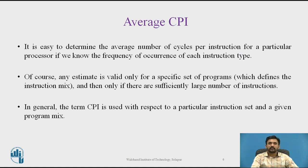It is easy to determine the average number of cycles per instruction (CPI) for a particular processor, if we know the frequency of occurrence of each instruction type. Any estimate is valid only for a specific set of programs and only if there are a sufficiently large number of instructions. In general, the term CPI is used with respect to a particular instruction set and a given program mix.